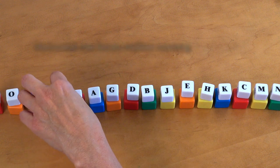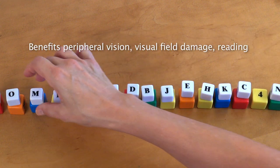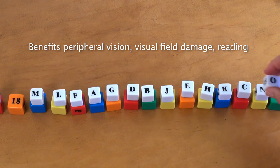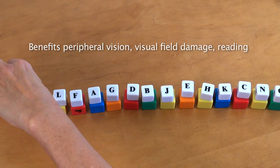If you know someone struggling with peripheral vision, visual field damage, or who just loses their place on the page when reading, this horizontal row is really great for that development.